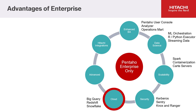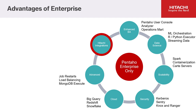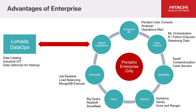With many organizations hosting data in the cloud, access is so much easier with an increasing array of enterprise-only steps. Pentaho is hardened for enterprise use and includes advanced capabilities such as job restarts and load balancing. It also has additional steps such as the MongoDB execute step. Finally, Pentaho Enterprise includes extra steps to seamlessly interact with other solutions within the Lumada DataOps portfolio. Details on all of these can be found at help.pentaho.com.